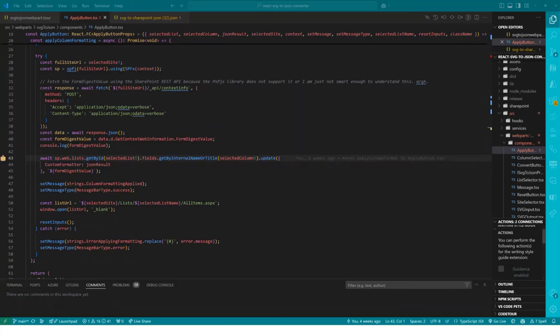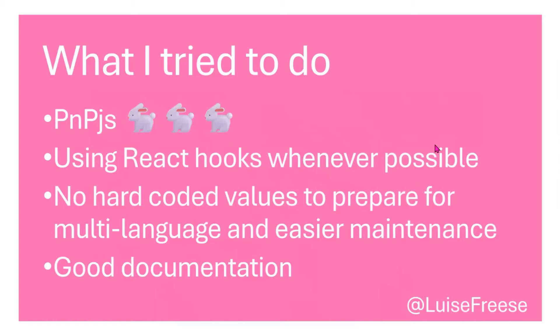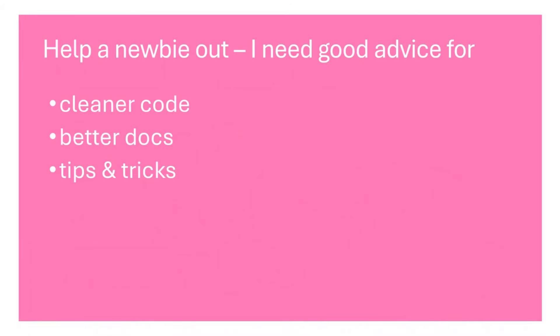Key lessons from building this: use PnPJS because without it I was making things very hard for myself. Use hooks whenever possible to keep logic reusable. No hard-coded values, to support multi-language. And I really wanted good documentation as a service to the community and future me. I'd love feedback from the community to help a newbie improve!